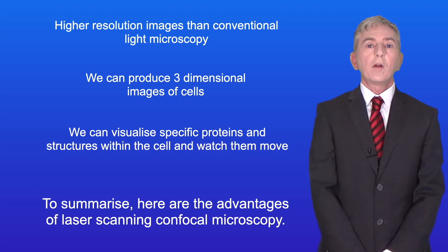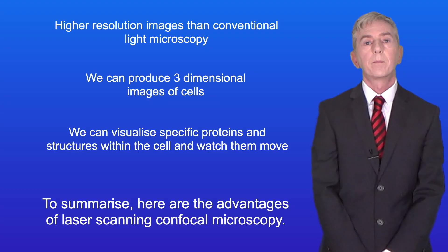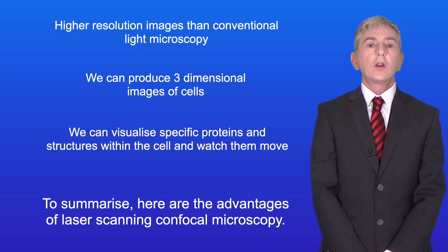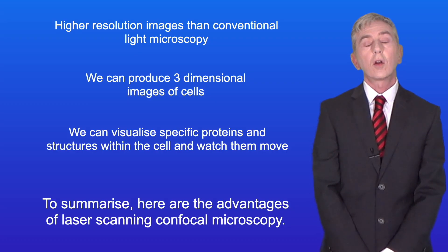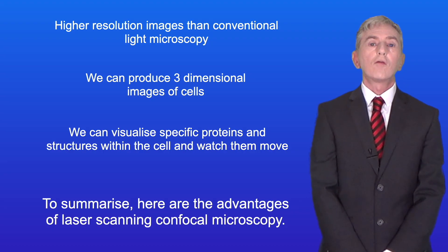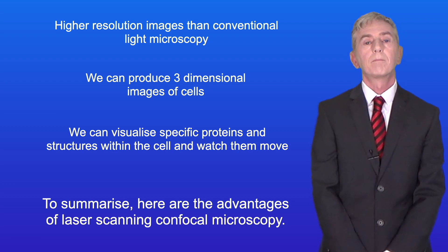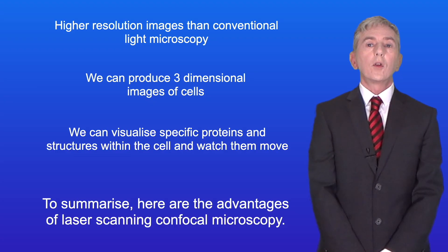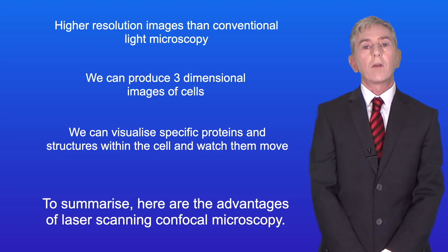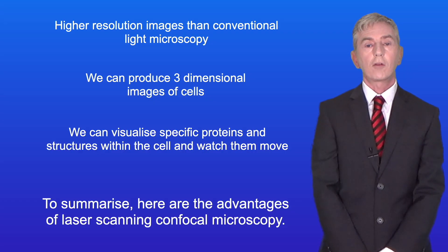So to summarise, here are the advantages of laser scanning confocal microscopy. Firstly, this produces higher resolution images than conventional light microscopy. Secondly, we can produce three-dimensional images of cells. And lastly, we can visualise specific proteins and structures within the cell and watch them move. Hopefully now you should be able to describe the advantages of laser scanning confocal microscopy over conventional light microscopy.